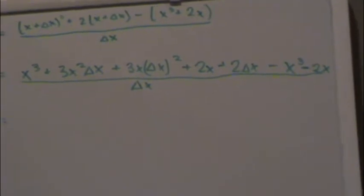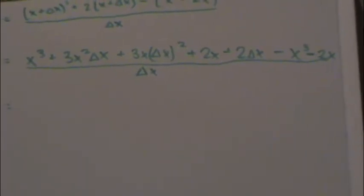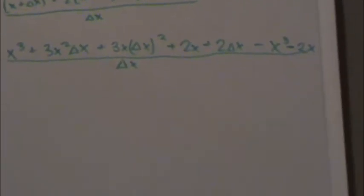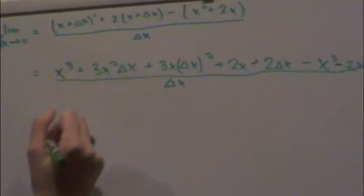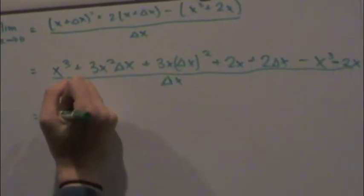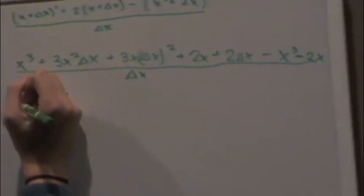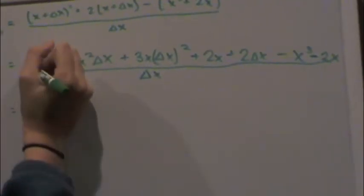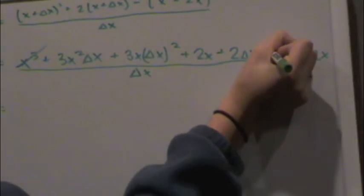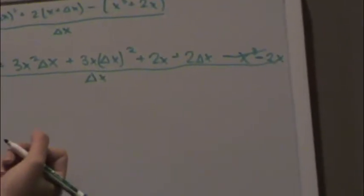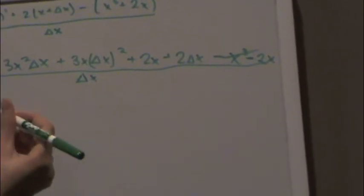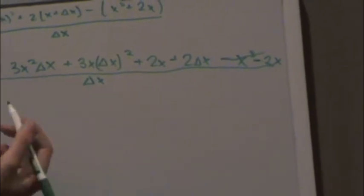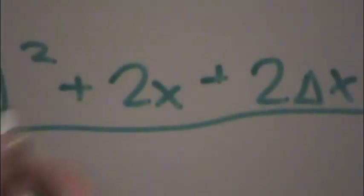And then you want to simplify. So the x cubed would cross out, and so would the two x's. Cross out this 2x and that 2x.